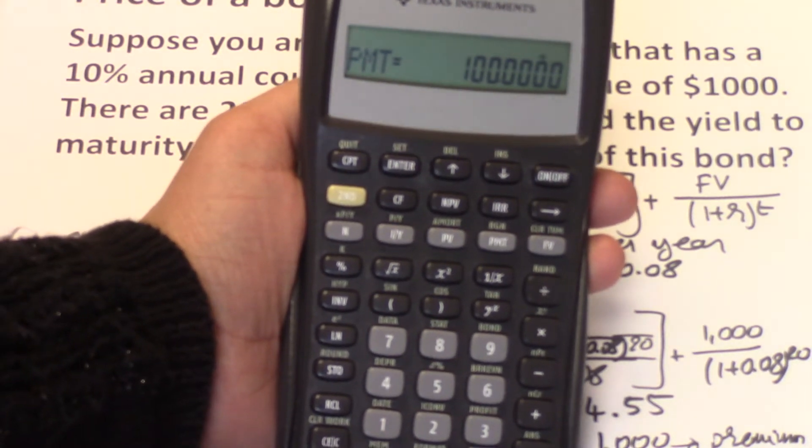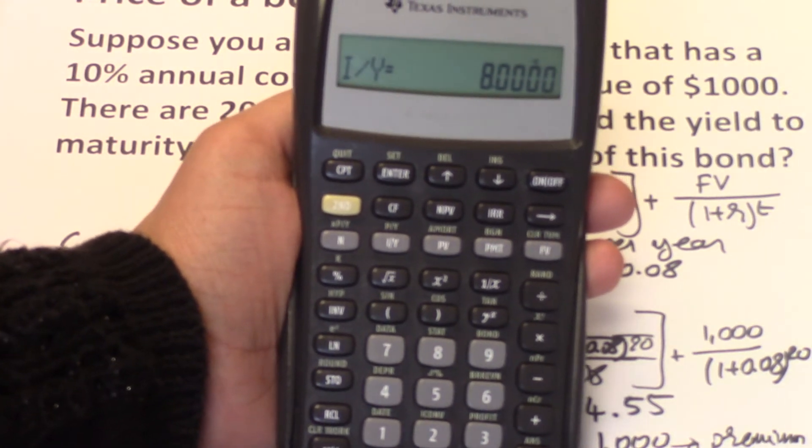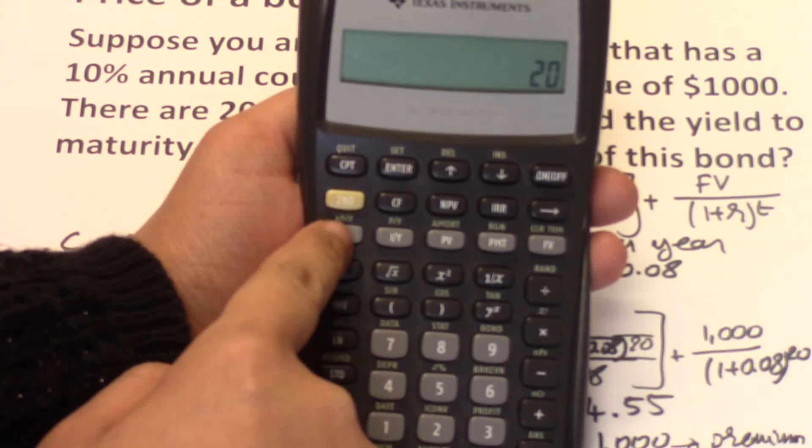The I/Y is the yield to maturity, and in this case it is 8. So 8 is your I/Y. And the bond has 20 years to maturity. So 20 is your N.